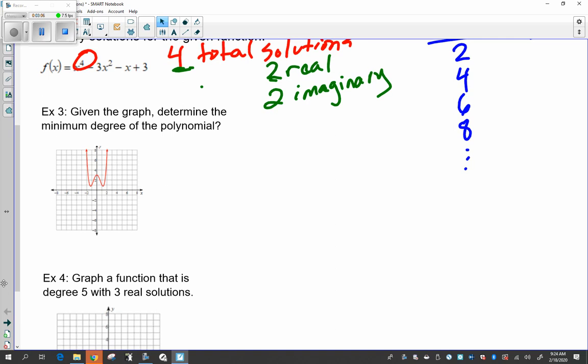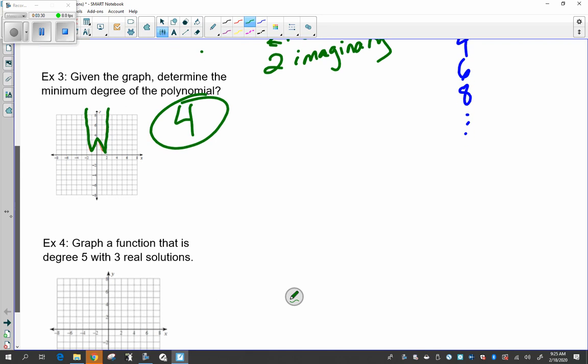And third example, given the graph, determine the minimum degree of polynomial. So looking at this graph, a lot of times I'll just say look at the slopes, call it the different slopes. We have one slope, now it changes, so 2, changes again, 3, 4. So this is minimum degree 4, and that's polynomial. And all of those would be imaginary, nothing hits the x-axis.